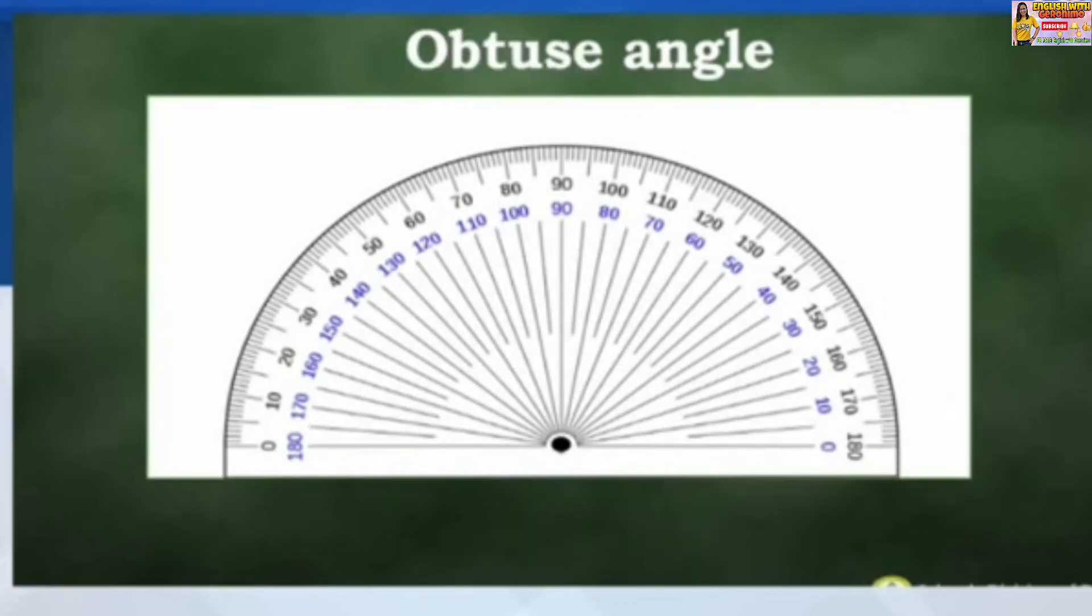Obtuse angle is an angle that measures greater than 90 degrees but less than 180 degrees. Example: Measure of angle GEF is equal to 115.